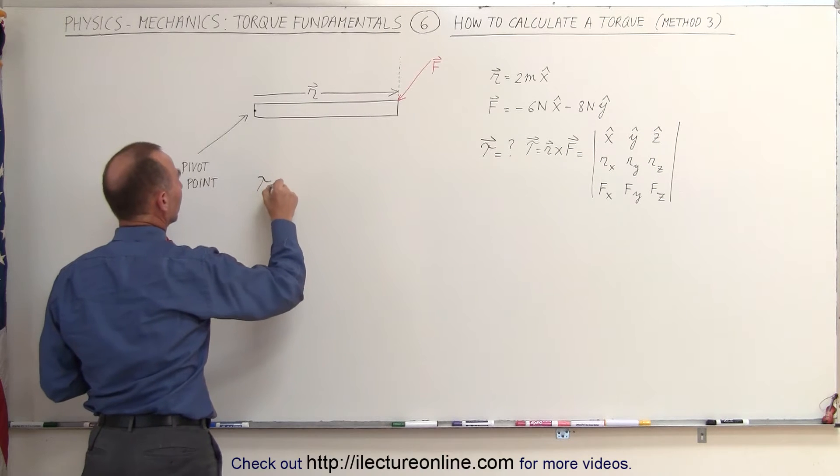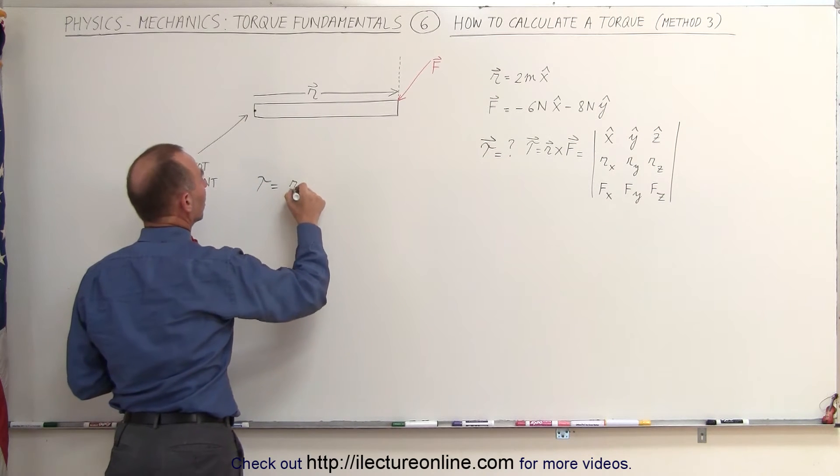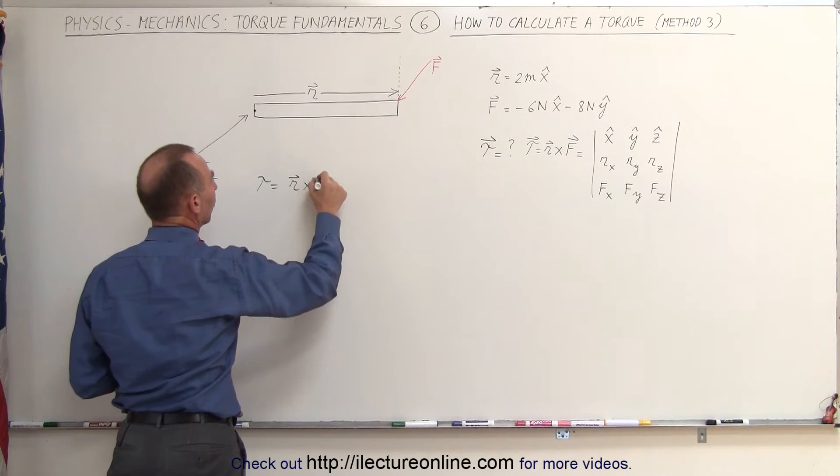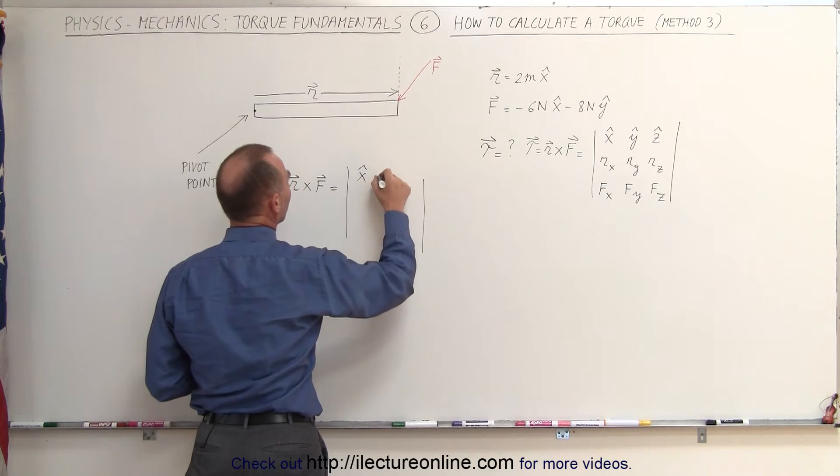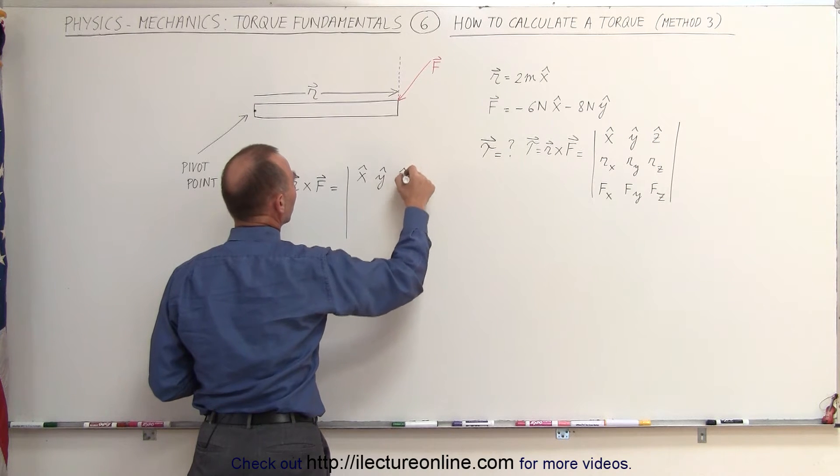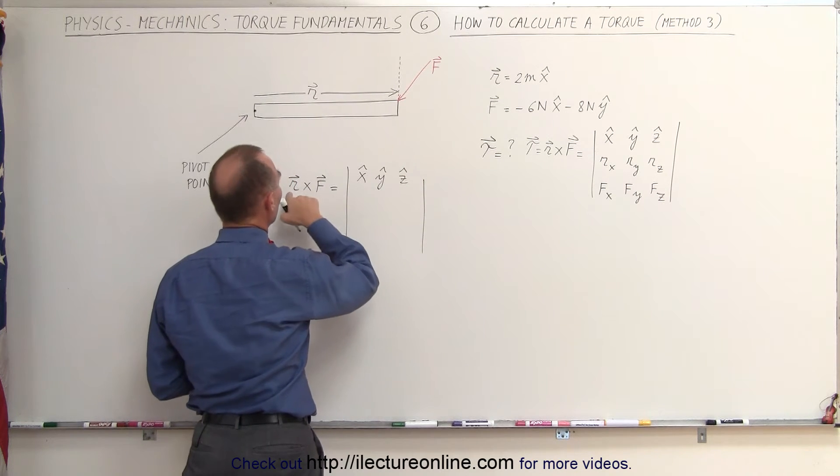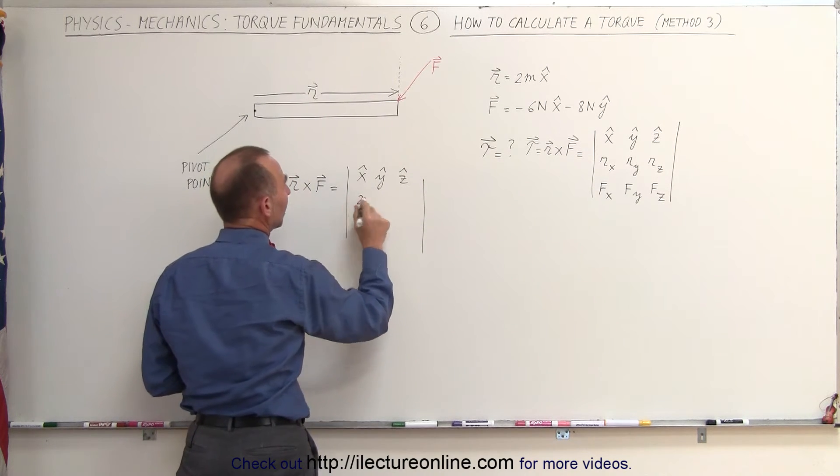So the torque is equal to R cross F, which is equal to the following matrix. It is the x component, the y component, and the z component unit vectors. The x component of the R vector would be 2 - I'll leave out the units. The y component is 0, and the z component is 0.